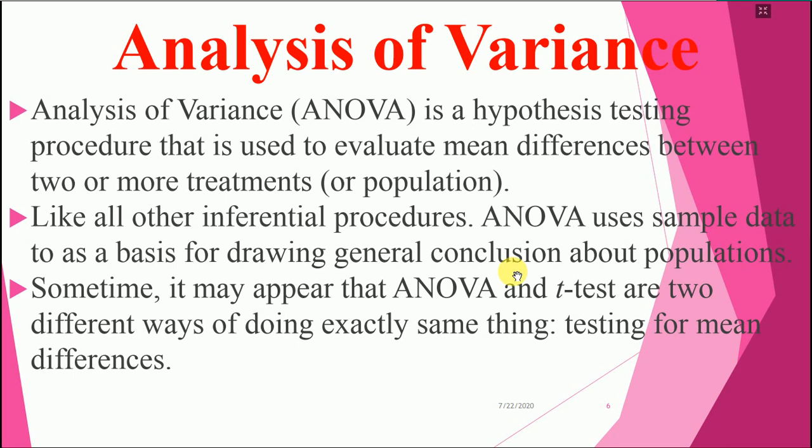Like all other inferential procedures, ANOVA uses sample data as a basis for drawing general conclusions about a population. You can generalize from that data to the population. It may sometimes appear that ANOVA and the t-test are two different ways of doing exactly the same thing — testing for mean differences.